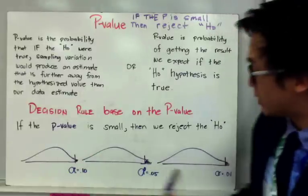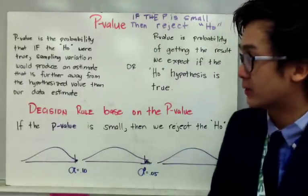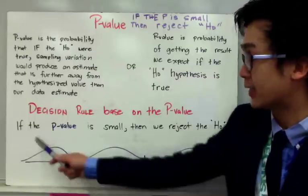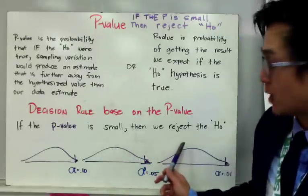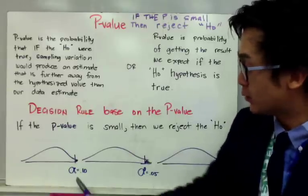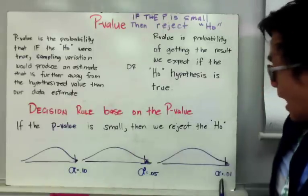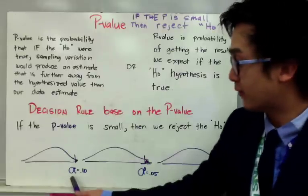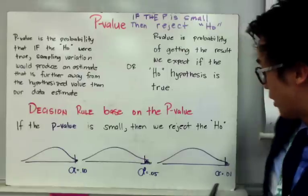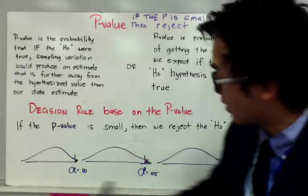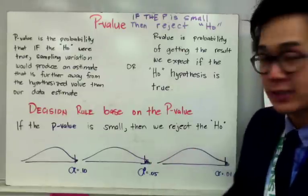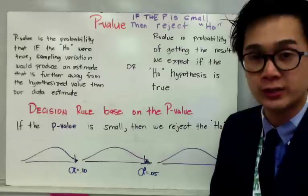Here are some decision rules we can use in different types of hypothesis testing. The decision rule based on the p-value is that if the p-value is small, then we reject the null hypothesis. How small does your p-value need to be to reject the null? This is based on your alpha, your significance level. Alpha can be 0.10, 0.05, or 0.01. These are the significance levels we compare our p-value to in order to determine if it is small enough to reject the null hypothesis.